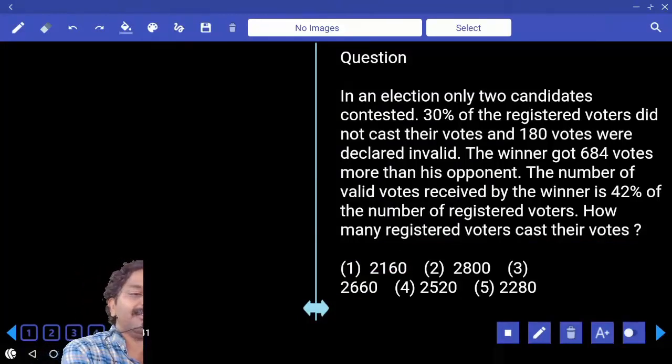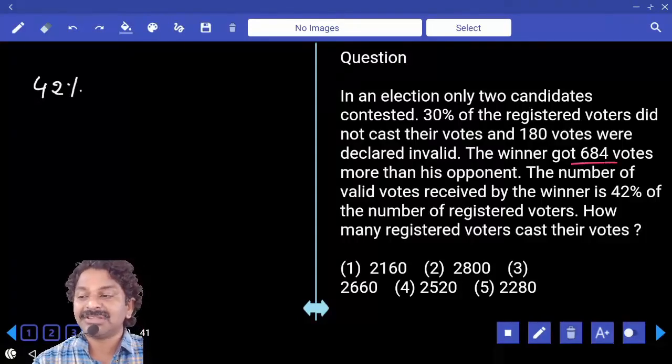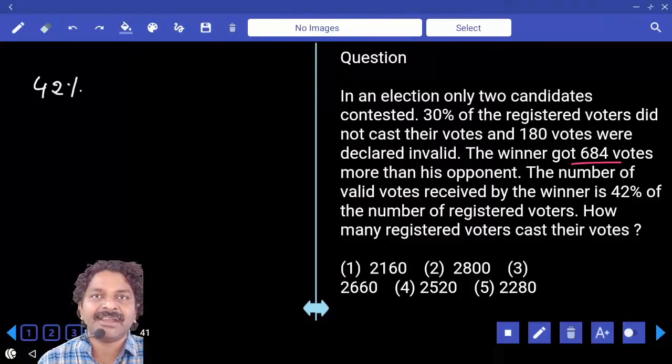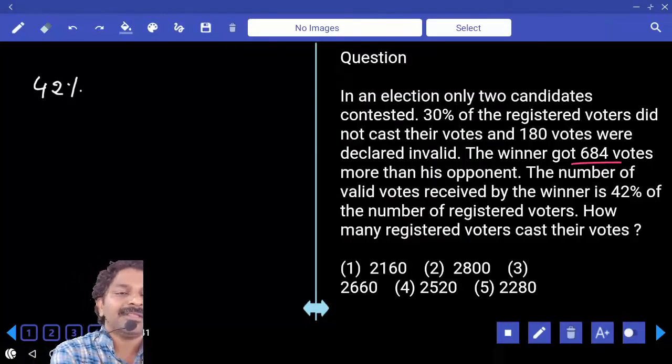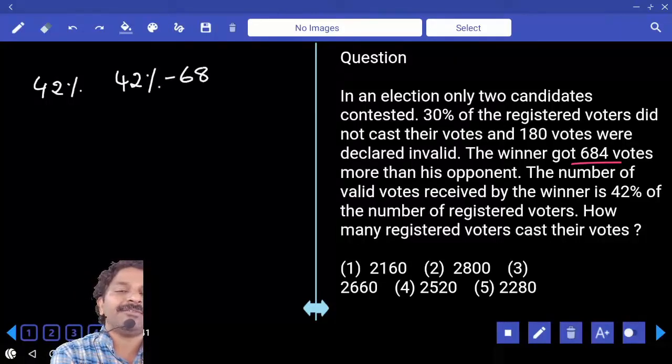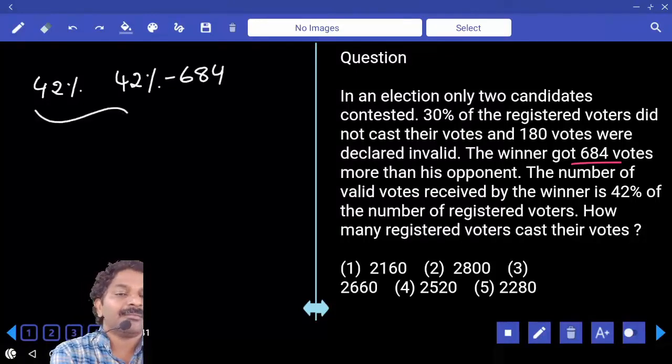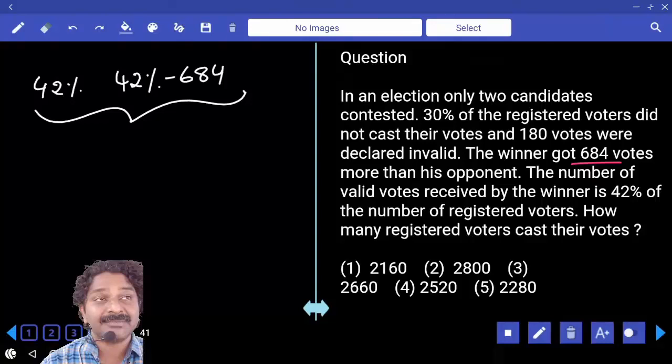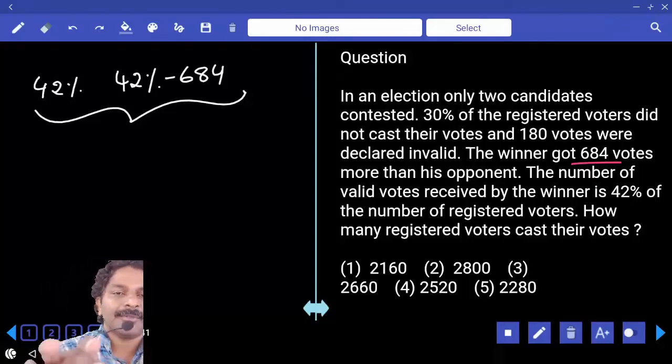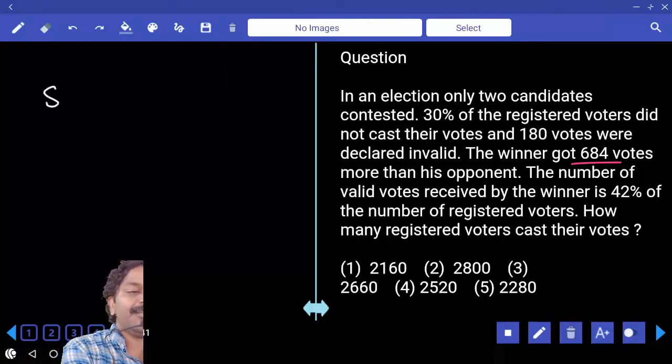So winner received 42% of the votes, and difference between votes received by winner and loser is 684 only. That means loser gets 42% minus 684 only. Can you tell me both together what percentage or how many votes they received? Both together received 84% minus 684. These are valid votes, right?